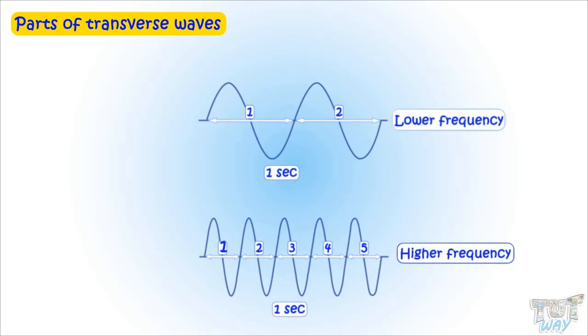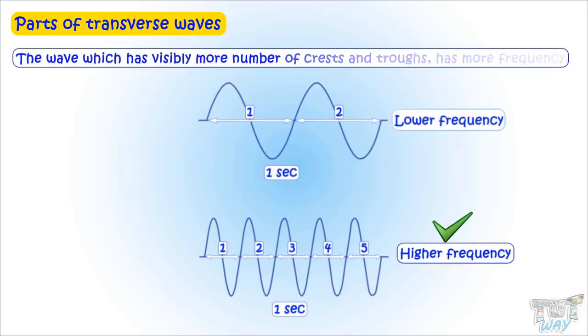That is, more number of wavelengths are produced in one second. And we know what's a wavelength: it's a distance between two consecutive crests or two consecutive troughs, or the distance covered by one crest and one trough. So, the wave which has visibly more number of crests and troughs has more frequency.